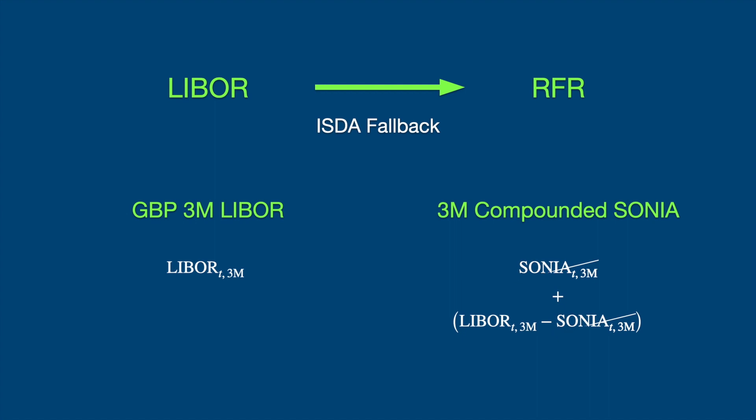We don't want the compounded SONIA to drop out of the calculation, for it is the future, so we keep it and instead try to proxy the spread. This spread won't be available once LIBOR disappears, so an easier solution would be to determine it using some historical or implied data, and then assume it remains fixed over time. So we are after some kind of average, and this is what the ISDA fallback really tries to achieve. Let's dive into the details.